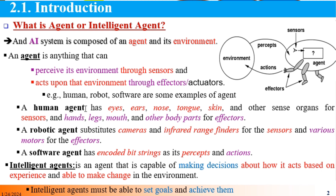The human is an example of an agent with sensors in the body. The effectors of the human being include the hands, legs, and other body parts. This is an example of the agent and parts of human beings.